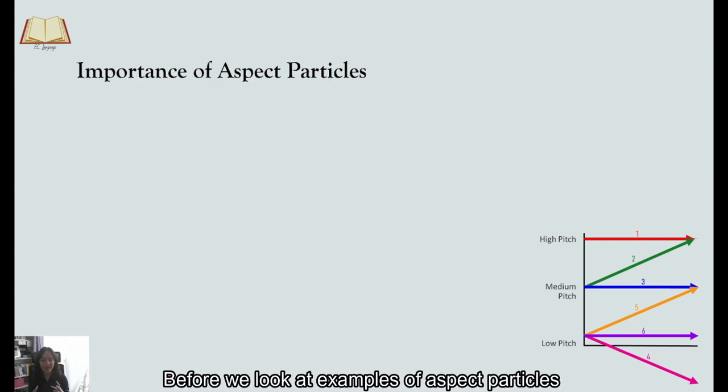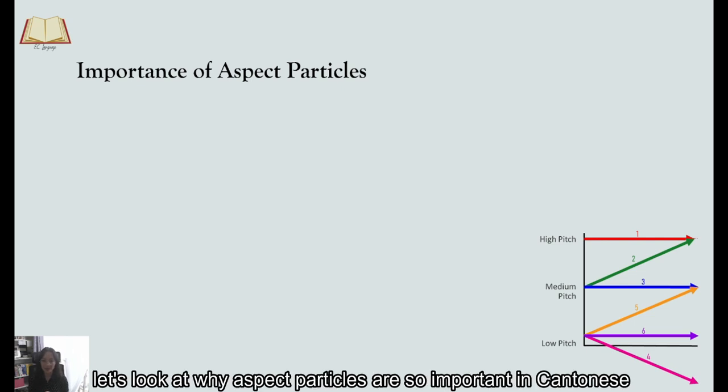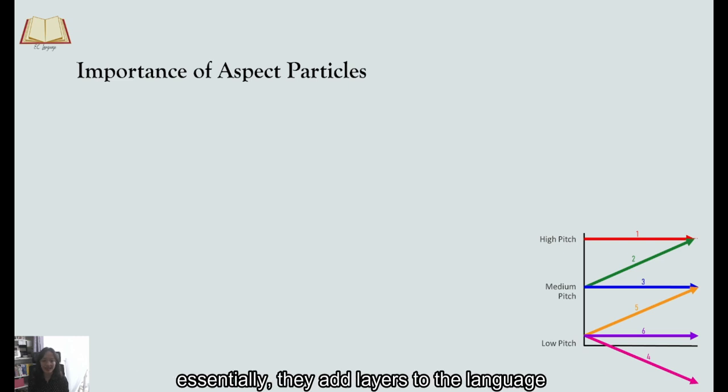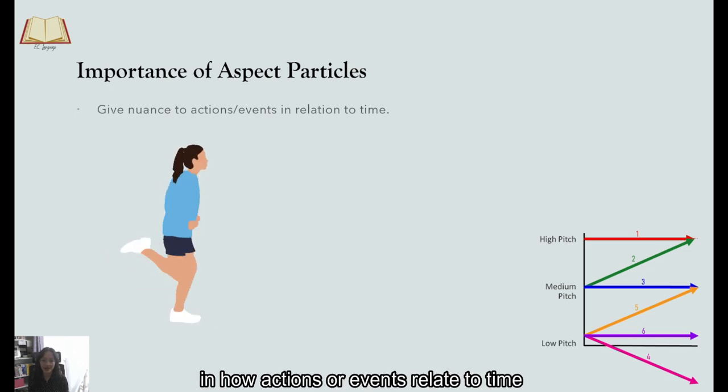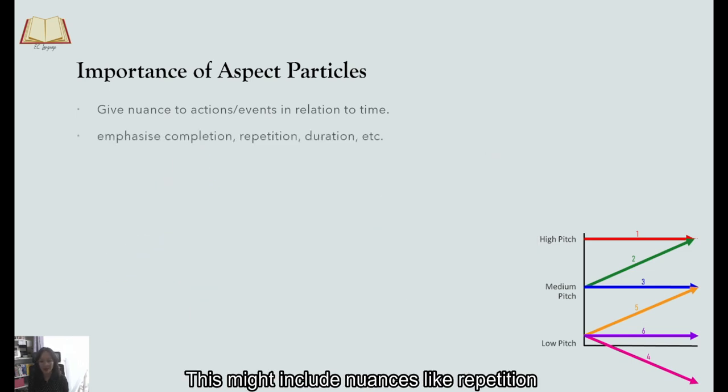So now before we look at examples of aspect particles, let's look at why aspect particles are so important in Cantonese. They add layers to the language. It allows us to express subtle distinctions in how actions or events relate to time. This might include nuances like repetition, completion and also duration.